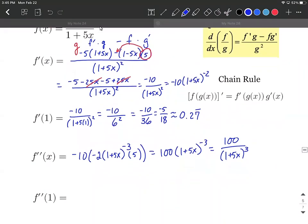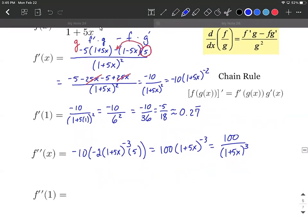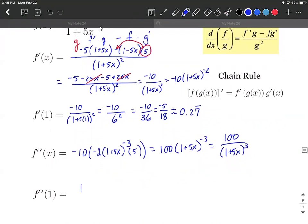All right, the last thing we're going to do on this video is we're going to evaluate the second derivative at an x value of 1. So as we do that, we're just going to plug 1 in for our x. And then simplify down, we have 100 over, that'll make 6 cubed. And 6 cubed works out to be 216, which I believe are both multiples of 4.